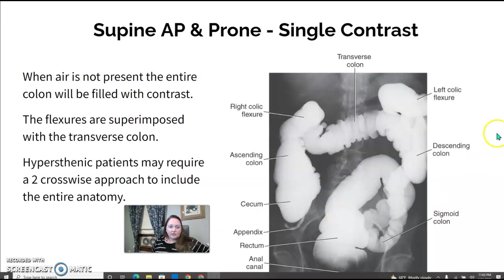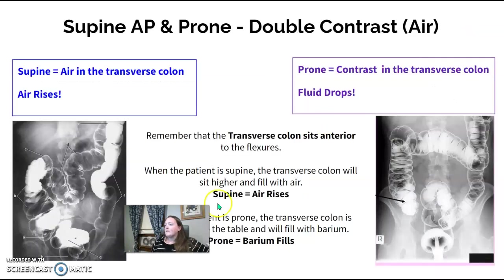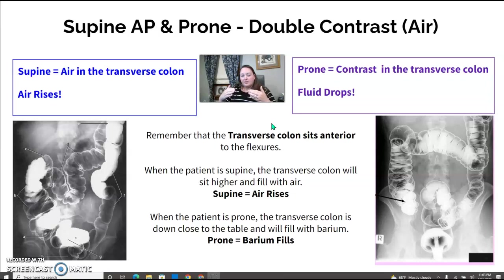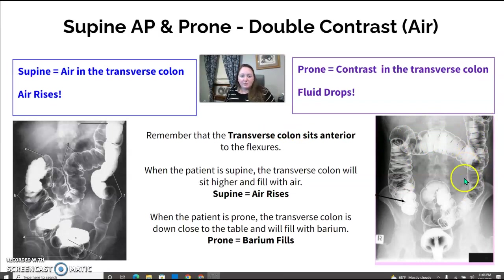For supine and prone with a single contrast — there's no air, it's contrast only — the colon is filled solid and they're evaluating the anatomy. With a double contrast, you'll notice contrast in some areas but air in others. When the patient is supine, the transverse colon sits anteriorly so it's the highest point; air rises and fluid drops, so the transverse colon fills with air while the ascending and descending have contrast. If the patient goes prone, it reverses — the transverse fills with barium and the ascending and descending have air.